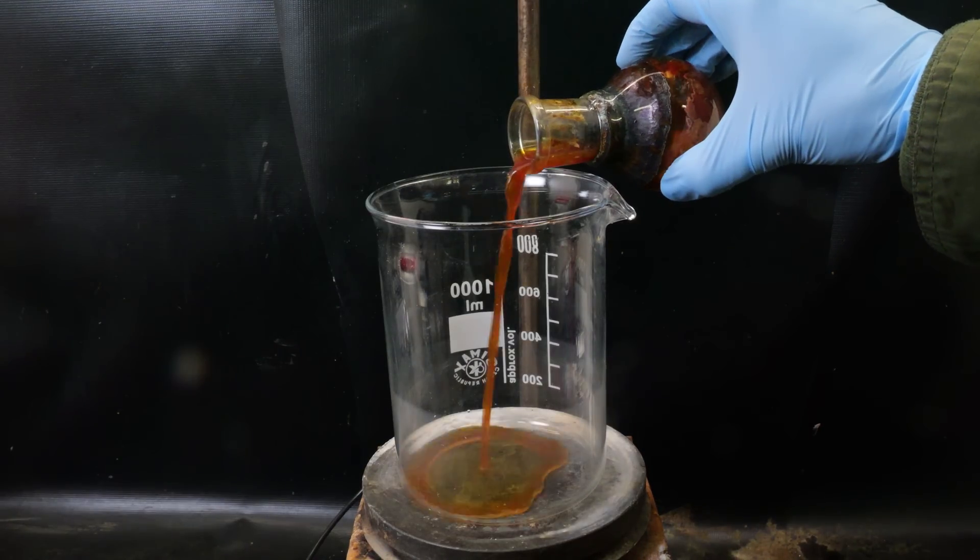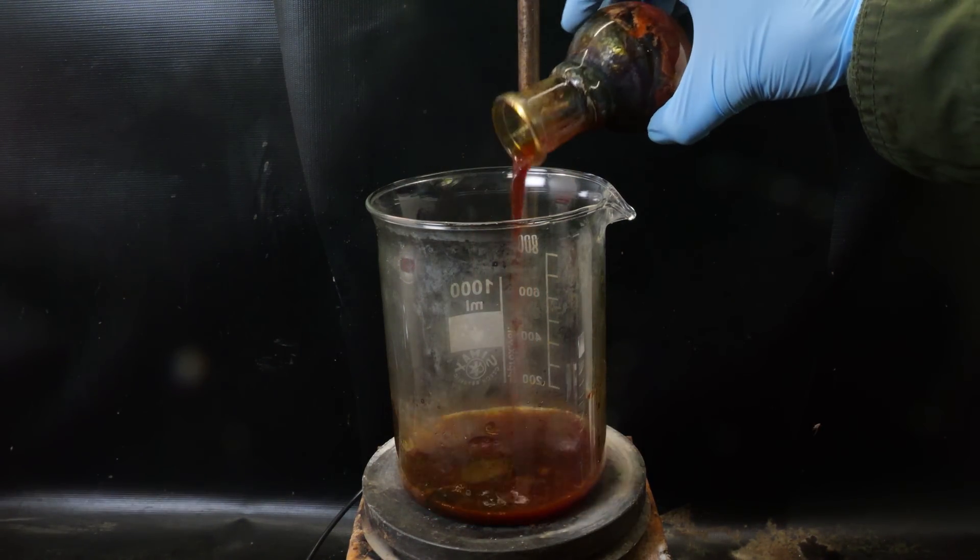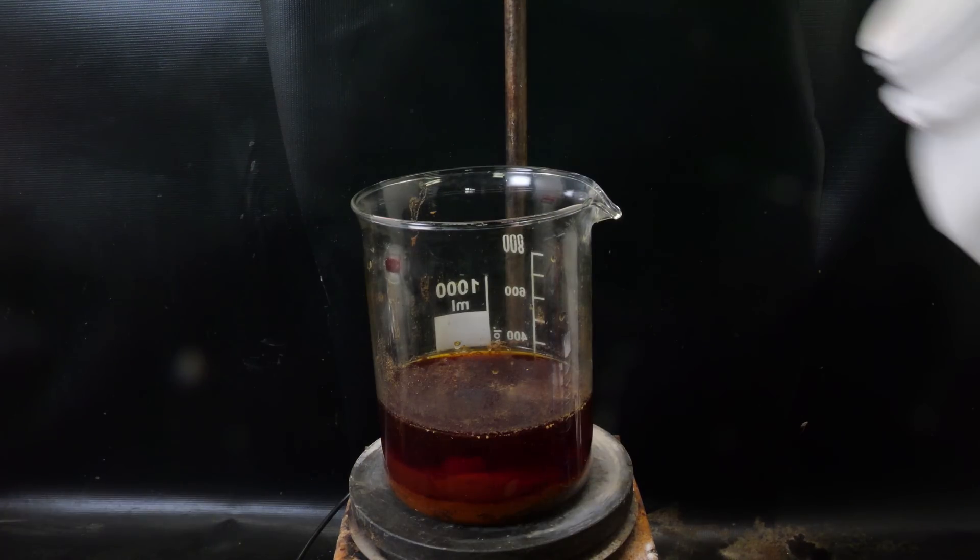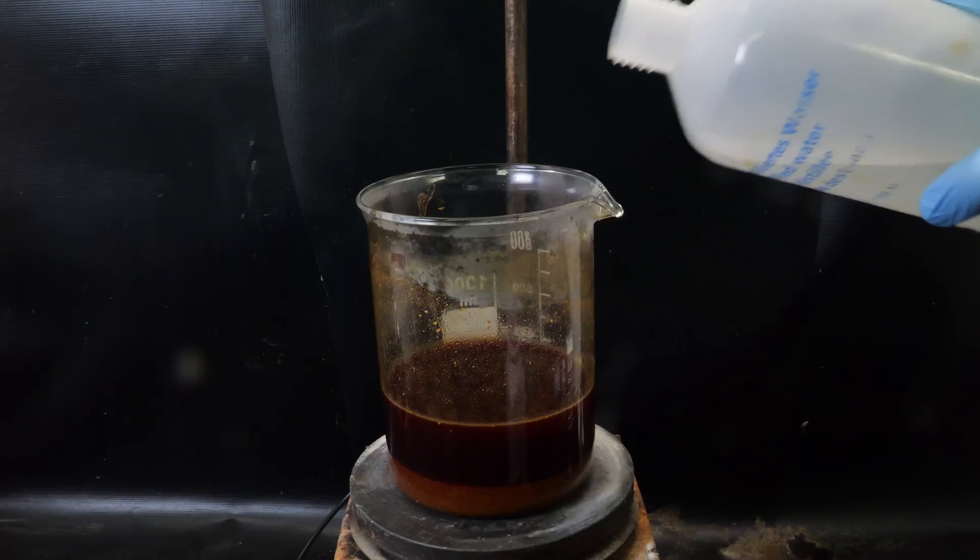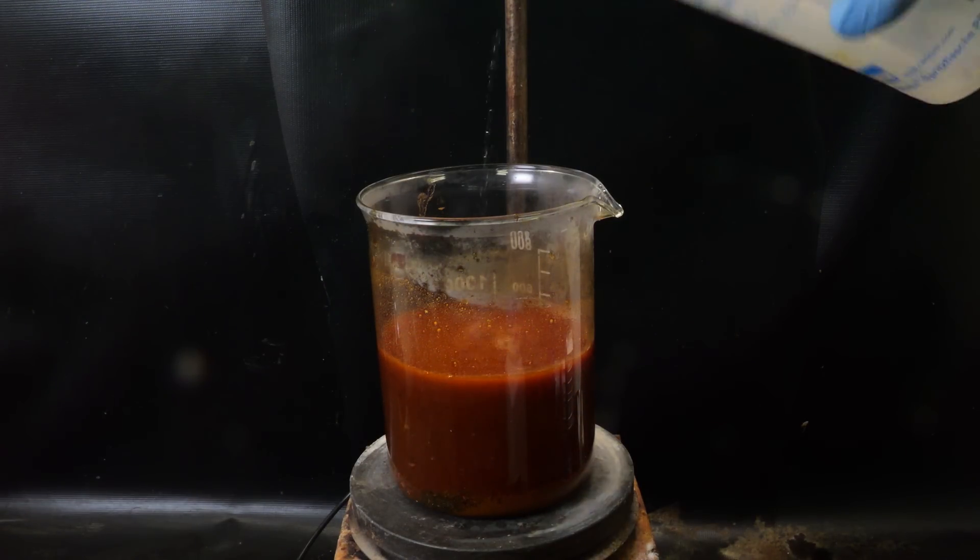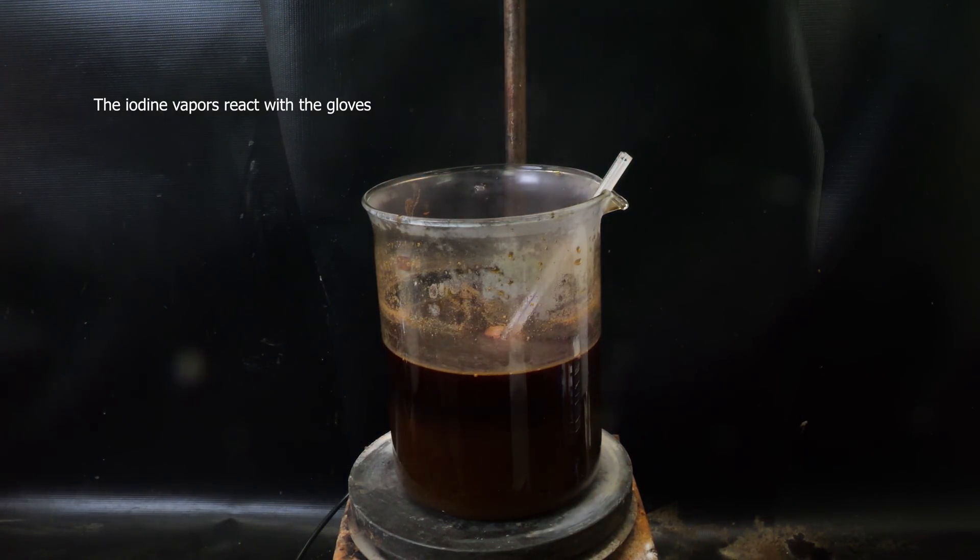I transfer all of the contents with more water to a big beaker. Now to destroy remaining acid and excess iodine, I add sodium hydroxide until all the iodine disappears. I also diluted it with some more water. It produces a lot of heat and a lot of iodine vapors come off.